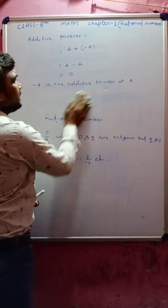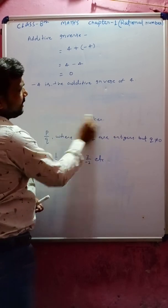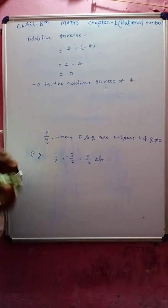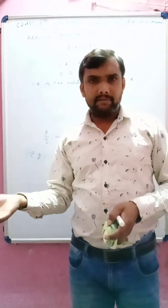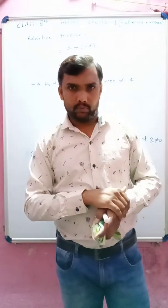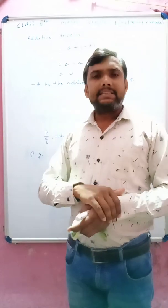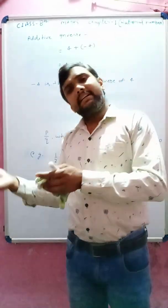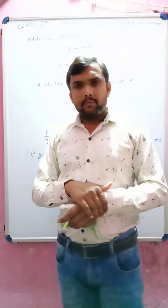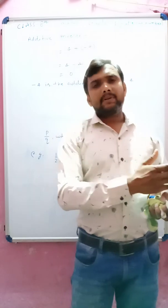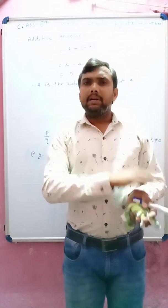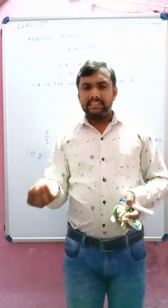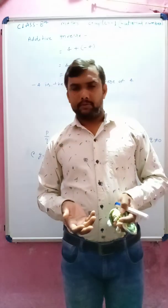What is the additive inverse of 1 by 2? Simply, minus 1 by 2 is the additive inverse of 1 by 2, because 1 by 2 is a positive number and minus 1 by 2 is a negative number. When the same number — one positive and one negative — are added together, the answer becomes 0.